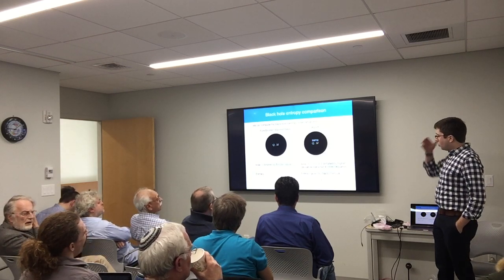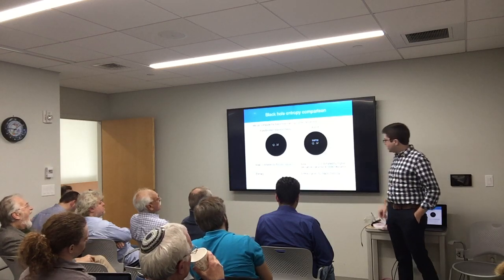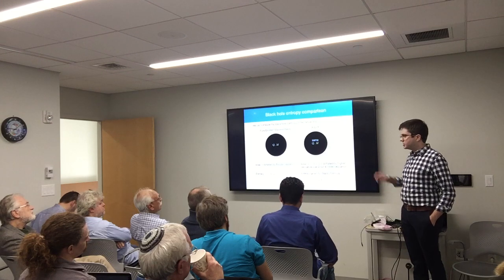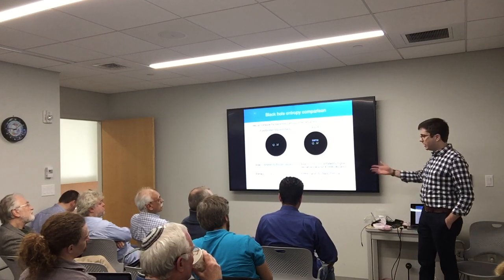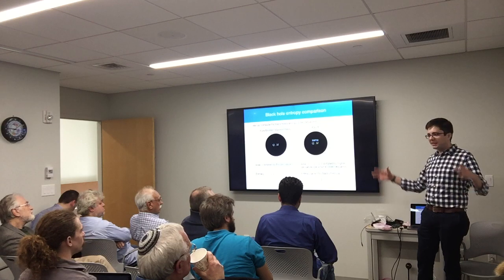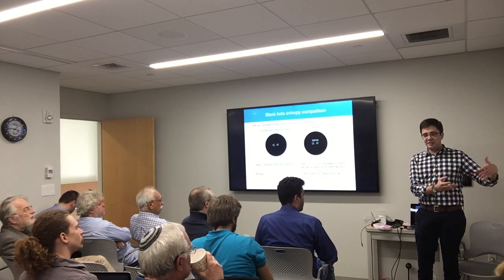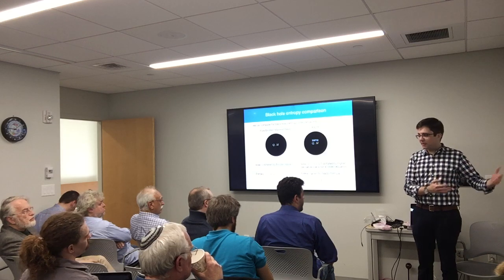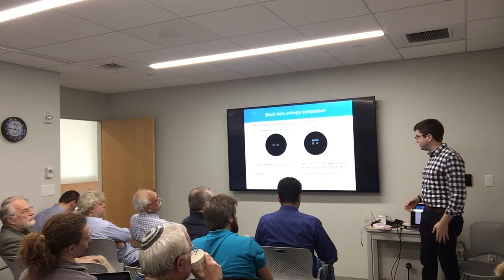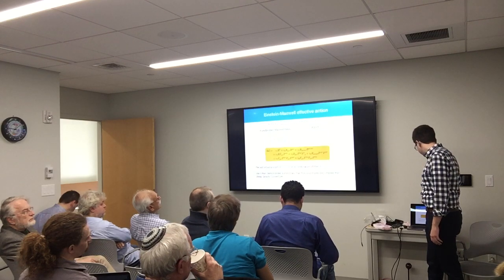What are the changes to the entropy? There are just explicit extra terms in the entropy coming from the Wald formula. In the new theory it's not just the area of the black hole, but there are extra terms. Moreover, since we're holding charge and mass fixed at infinity but changing the equations of motion by adding nonlinear terms to the Einstein and Maxwell equations, the area changes a little bit when we hold charge and mass fixed. So we need to take into account both of those effects.